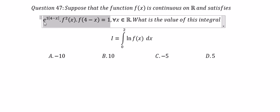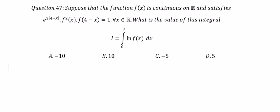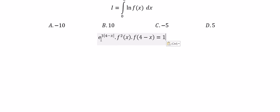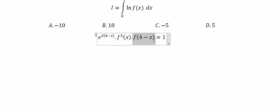First we need to concentrate on this equation. We have e to the power of 3 multiplied by the absolute value of (4 minus x), multiplied by f of x squared, multiplied by f of (4 minus x), equals 1. We need to divide both sides by these terms.